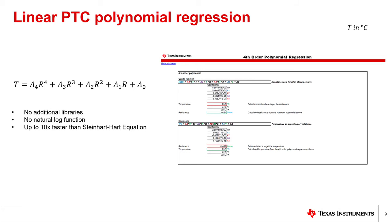This equation is the most accurate method for linear PTC thermistors and is up to 10 times faster than the Steinhart-Hart equation due to simpler mathematics. NTC thermistors are not able to use this equation because of their nonlinear resistance characteristic over temperature, whereas it approximates the linear PTC thermistor curve very well.